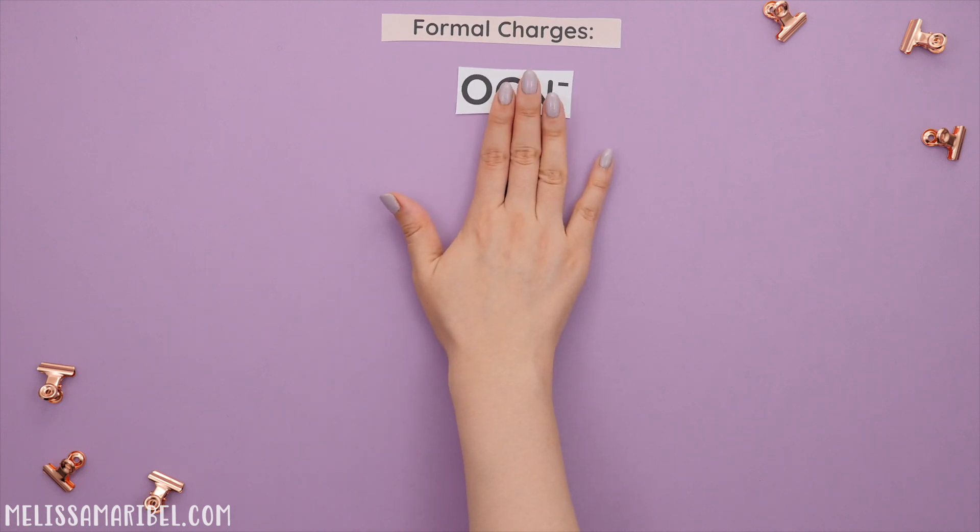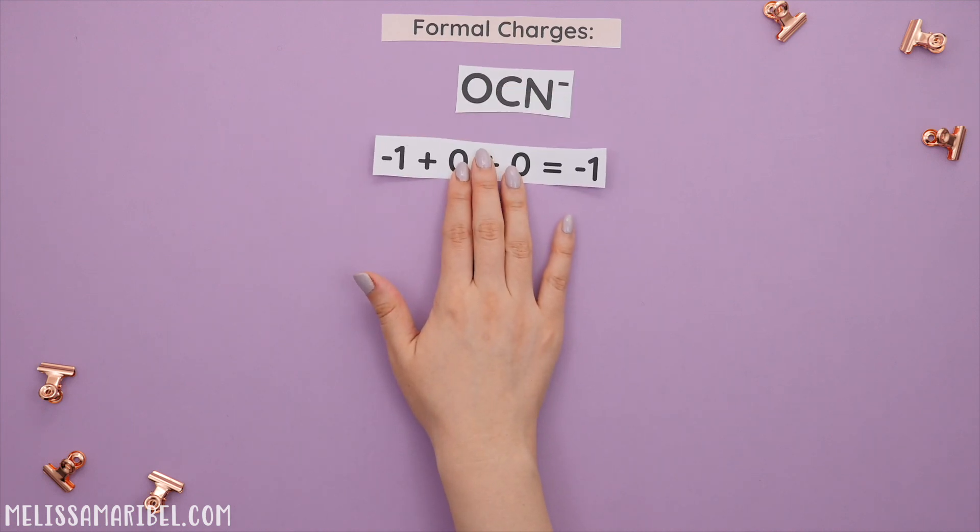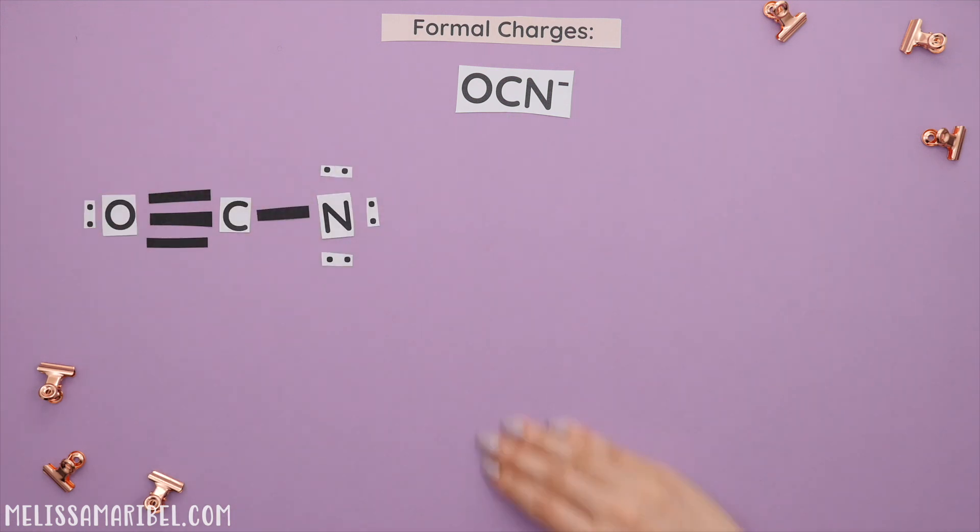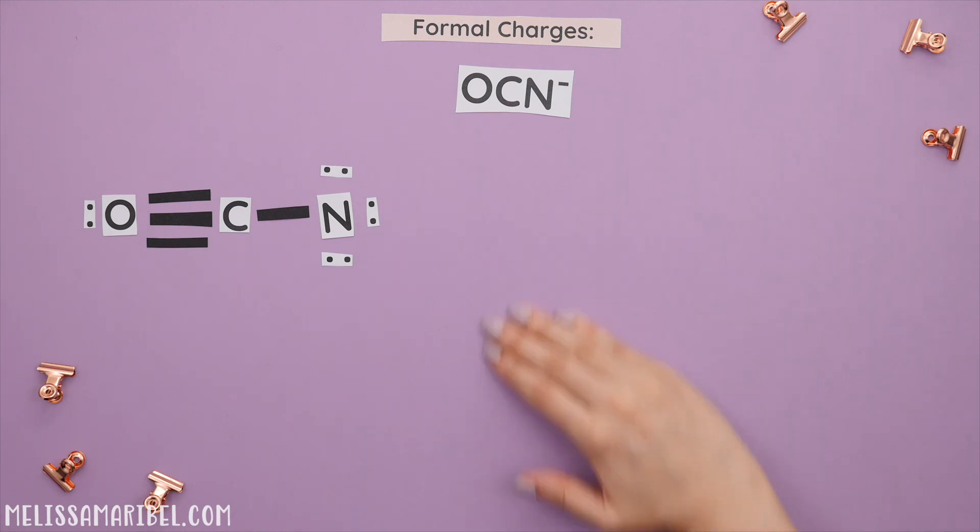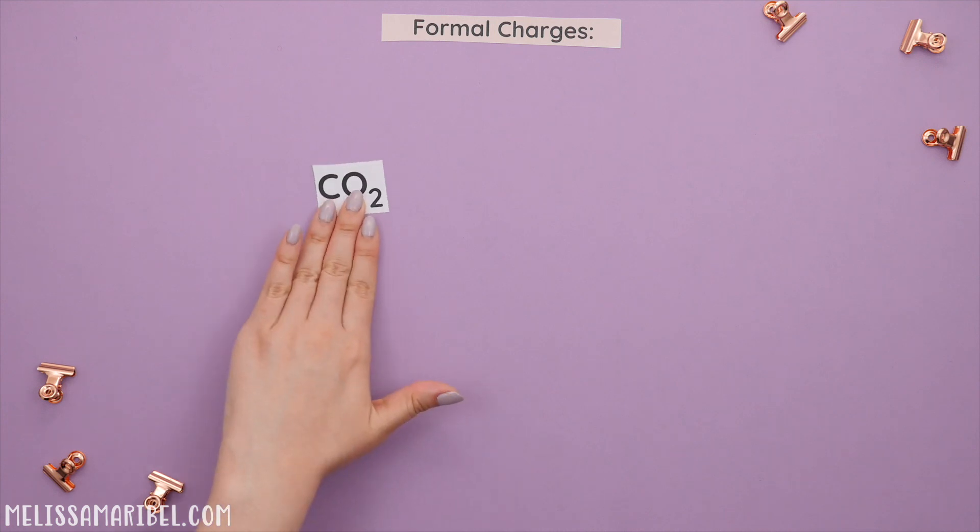Formal charges are the charges of each individual atom within the molecule. All the formal charges add up to the overall charge of the molecule. Formal charges are a great way to check if we drew the most stable Lewis structure. There are two different cases: Case 1 is a neutral molecule and case 2 is a charged molecule.